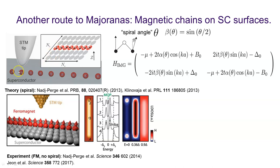The community has looked for other platforms where they would see signatures linked to topological states and Majorana bound states. One such proposal involves using magnetic chains deposited on superconducting surfaces, probed not by transport experiments but by an STM tip — a much more local probe. You can position the tip right on top of each atom and see whether the density of states there differs, characterizing a zero-mode Majorana signature in the conductance from surface to tip.